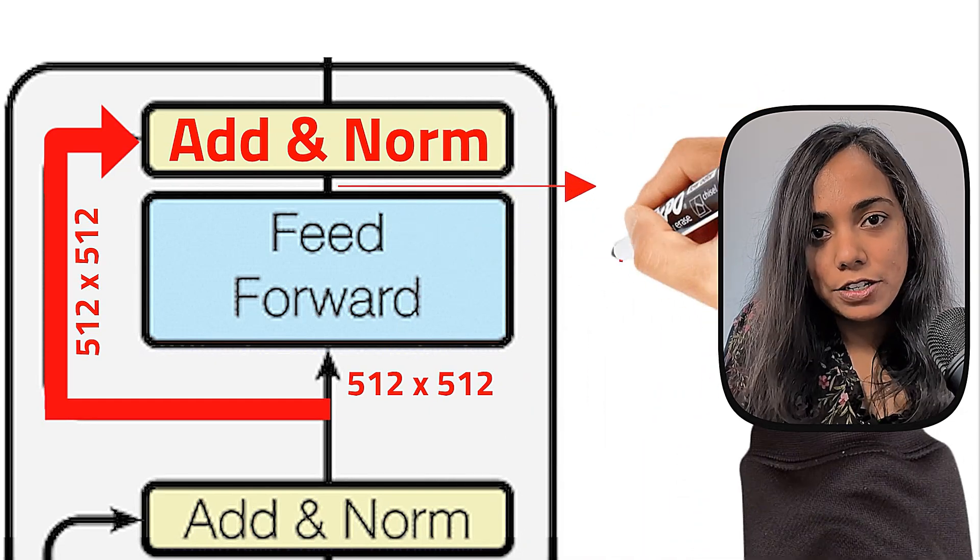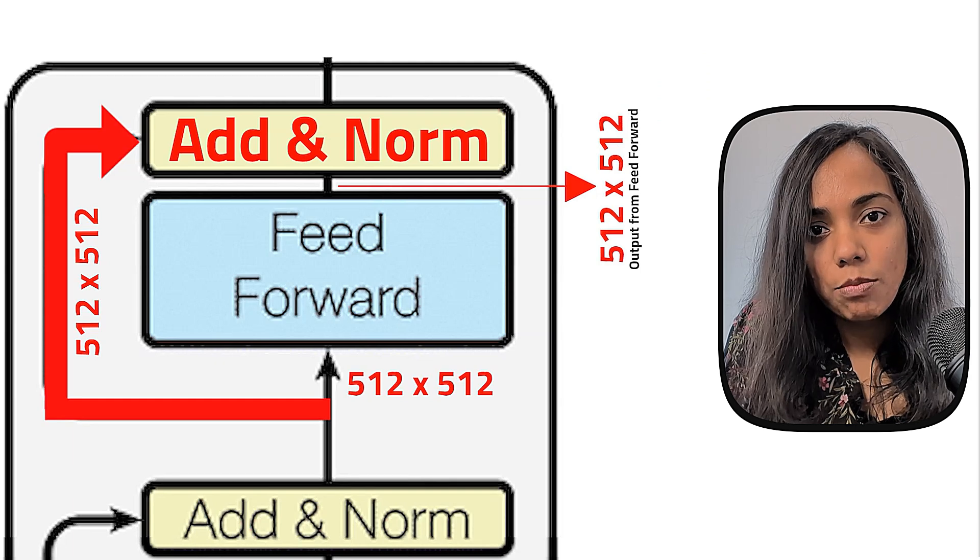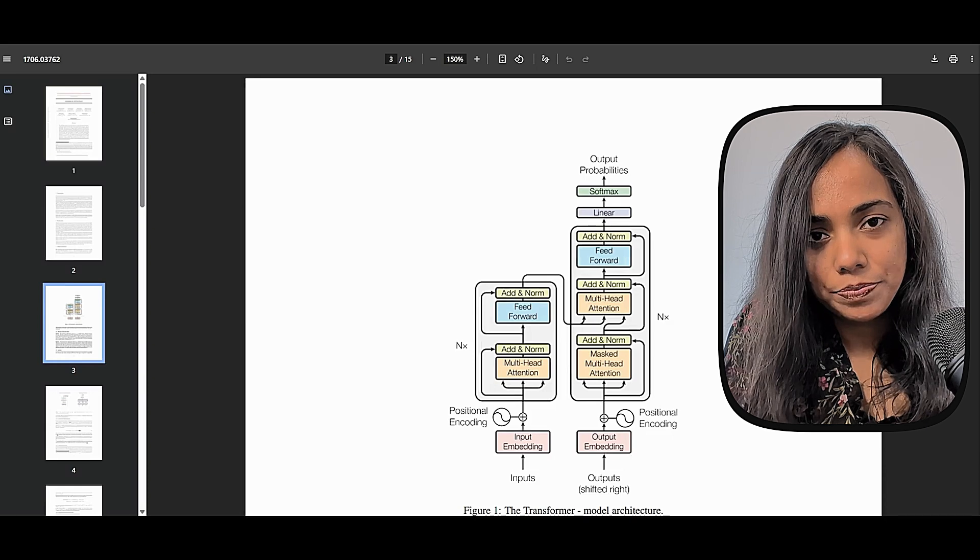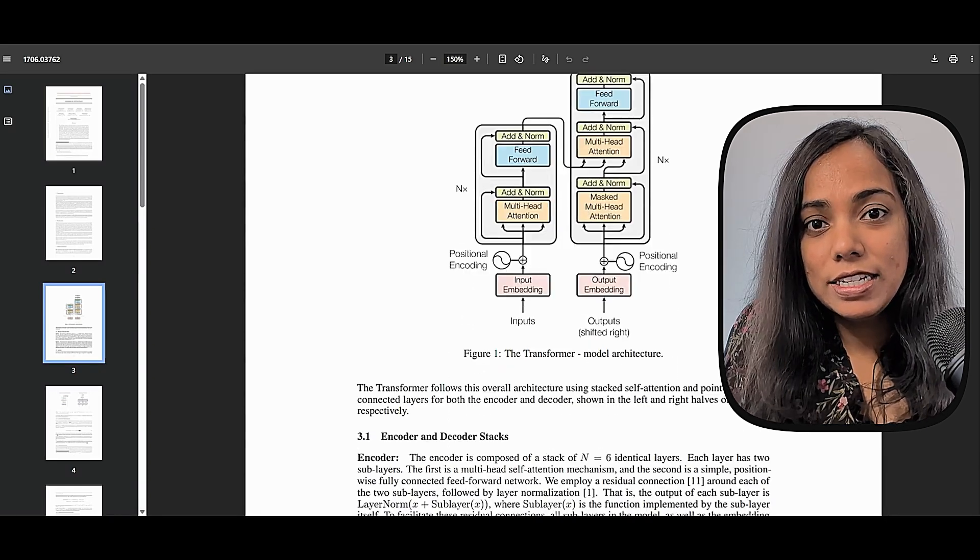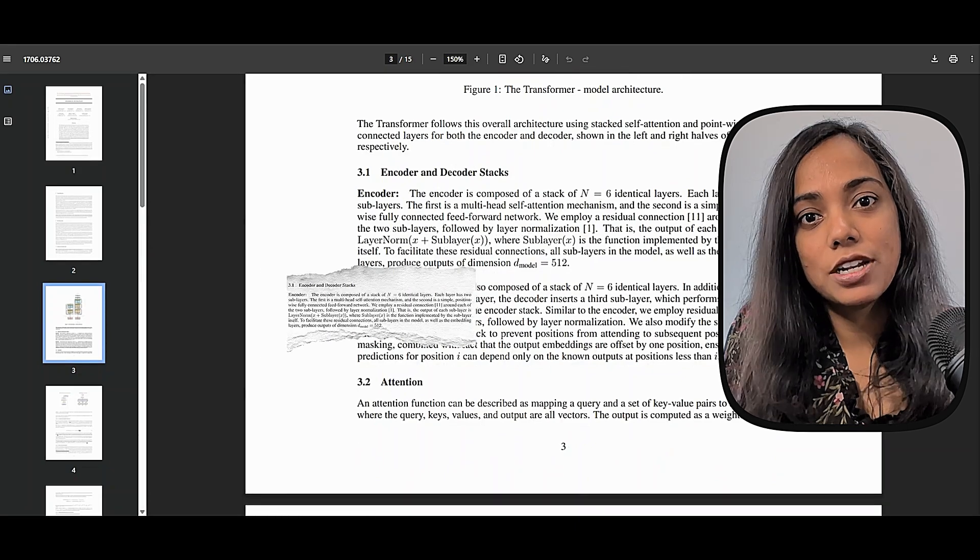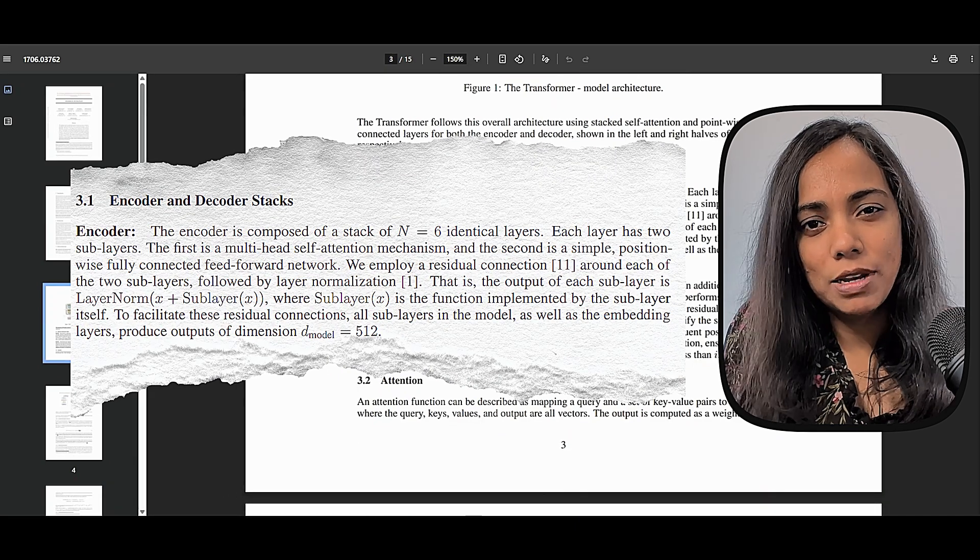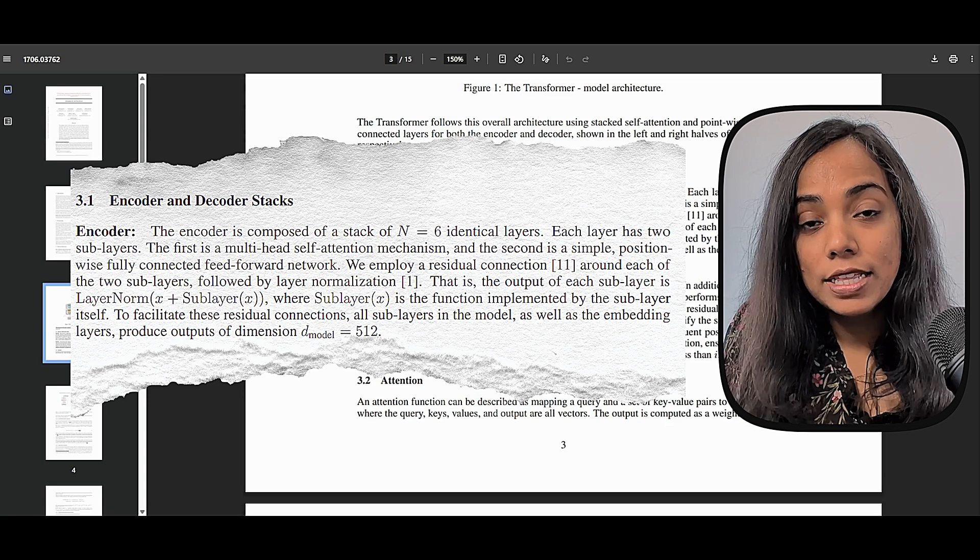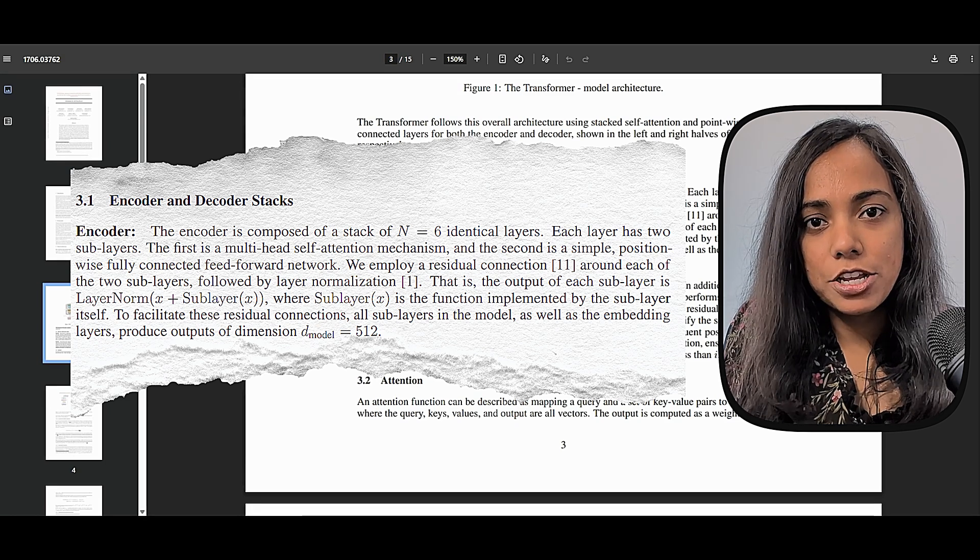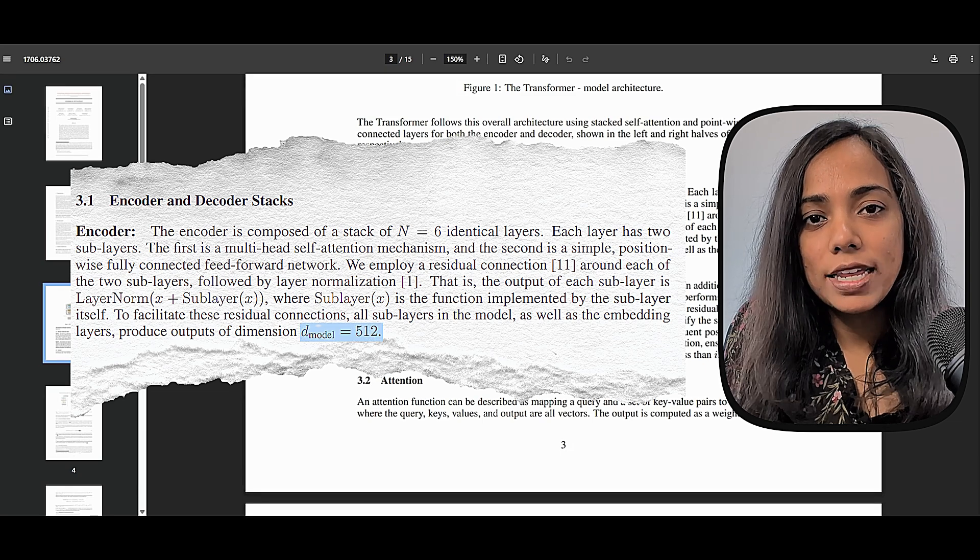The encoder is designed such that the input and the output of each sub-layer as well as the output of the initial embedding layers all have the same dimension. This specific dimension is called D-model in the paper which is equal to 512 in the base model. Because each layer takes a D-model dimensional input and produces a D-model dimensional output via the sub-layers and residual connections, the D-model dimension is maintained as the representations pass up through the entire stack.